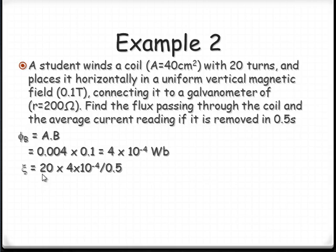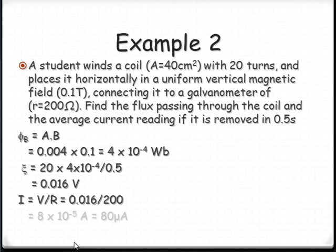EMF, we've got 20 turns times the flux divided by the change in time. So we've got about 0.016 volts of induced EMF. From there, we've got to find the current and that's volts over resistance. So we get a value of about 8 times 10 to the negative 5 amps or about 80 micro amps. And this sounds very reasonable because we're only going to induce a very small current with the stuff that we've got.